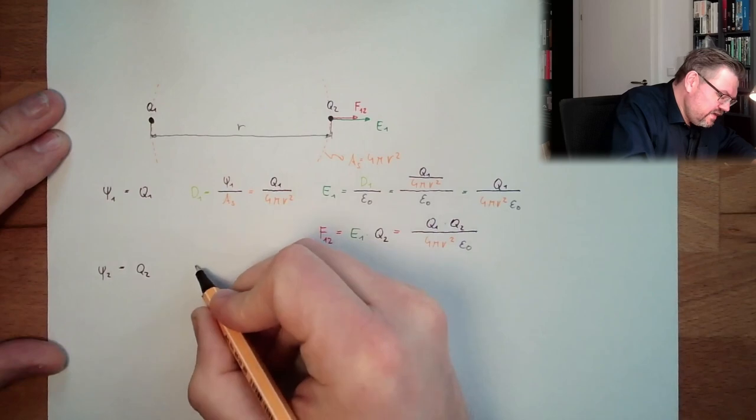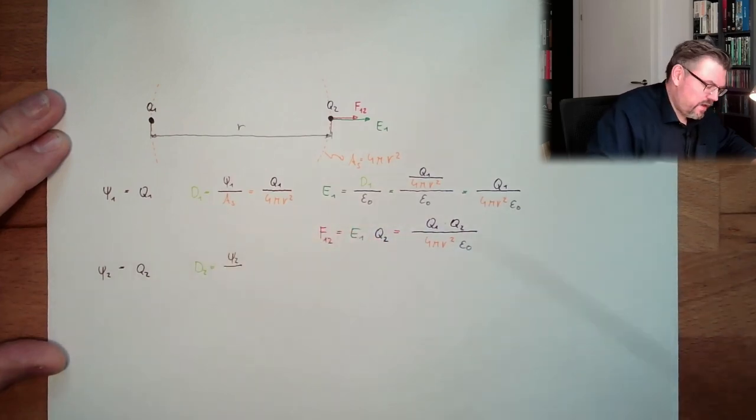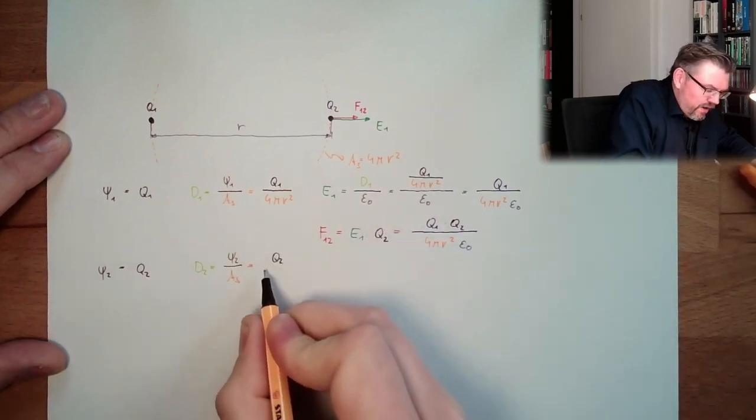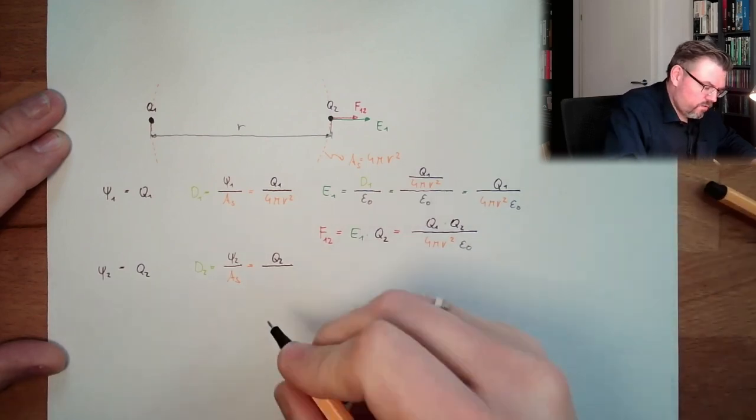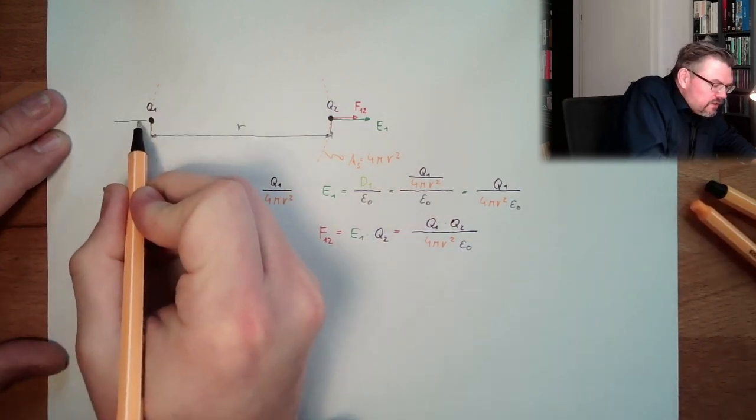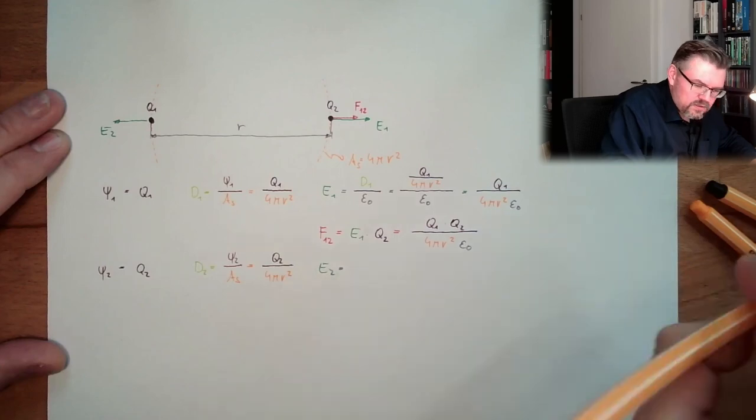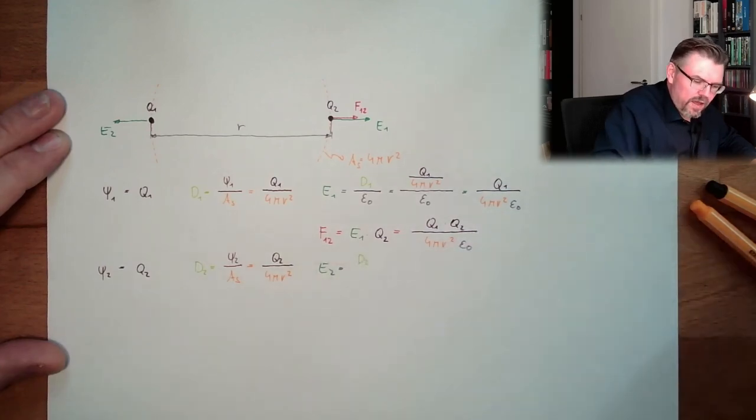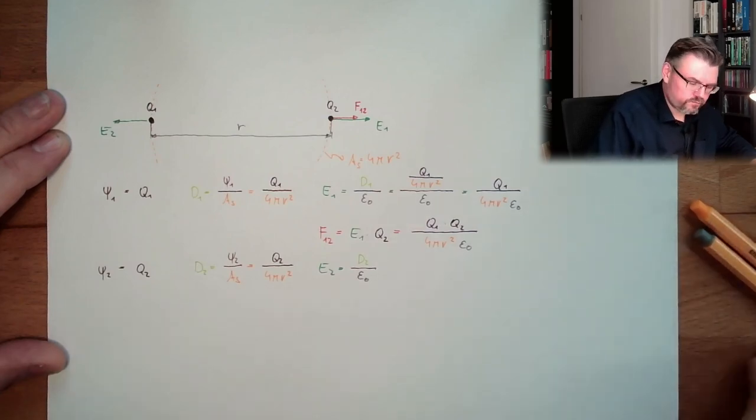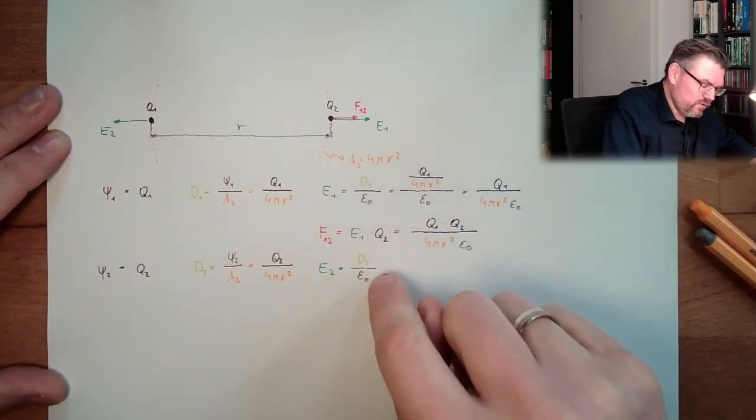So what is D2? D2 equals Psi2 divided by As. It's the same area. So we have actually Q2 divided by 4 pi r squared. And now the electric field working in this direction. This is E2. Electric field 2 equals D2. And the area has still the same property. Still the same things are working there. The same physical laws. D2 divided by epsilon 0.